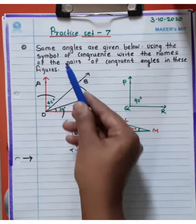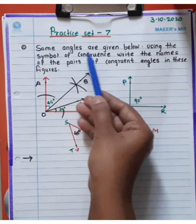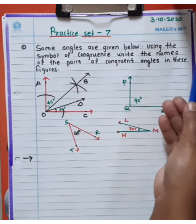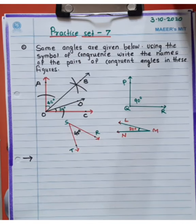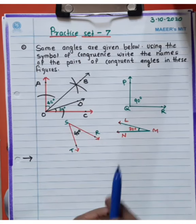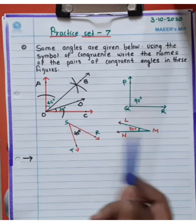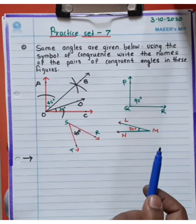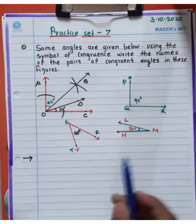Look at this carefully, students. Some angles are given below. Using the symbol of congruent angles, write the name of the pairs of congruent angles in these figures.